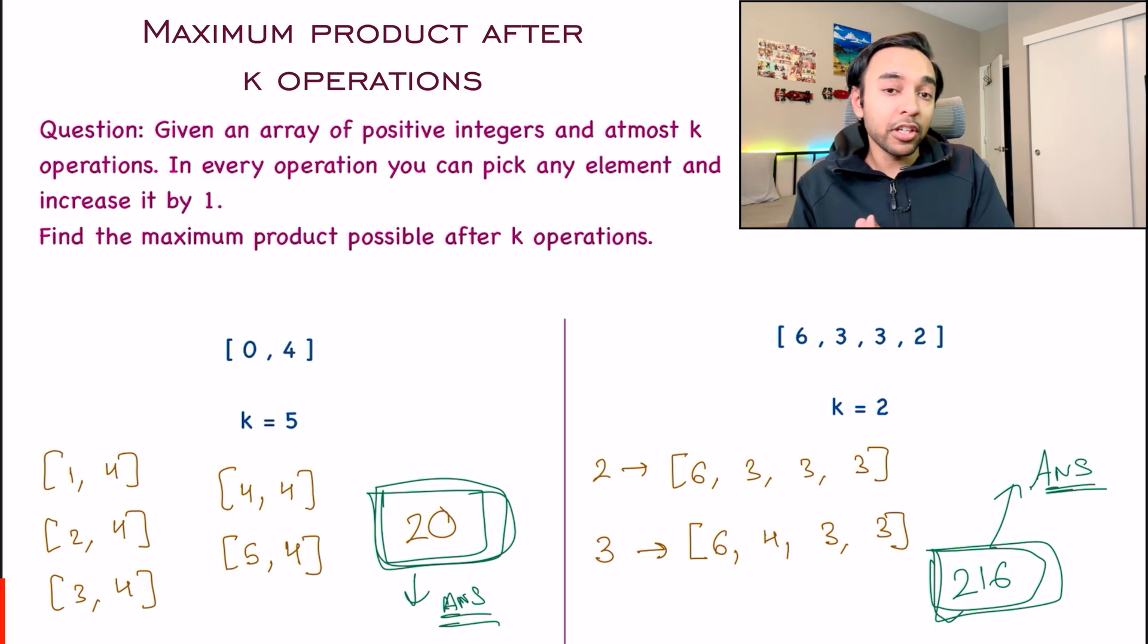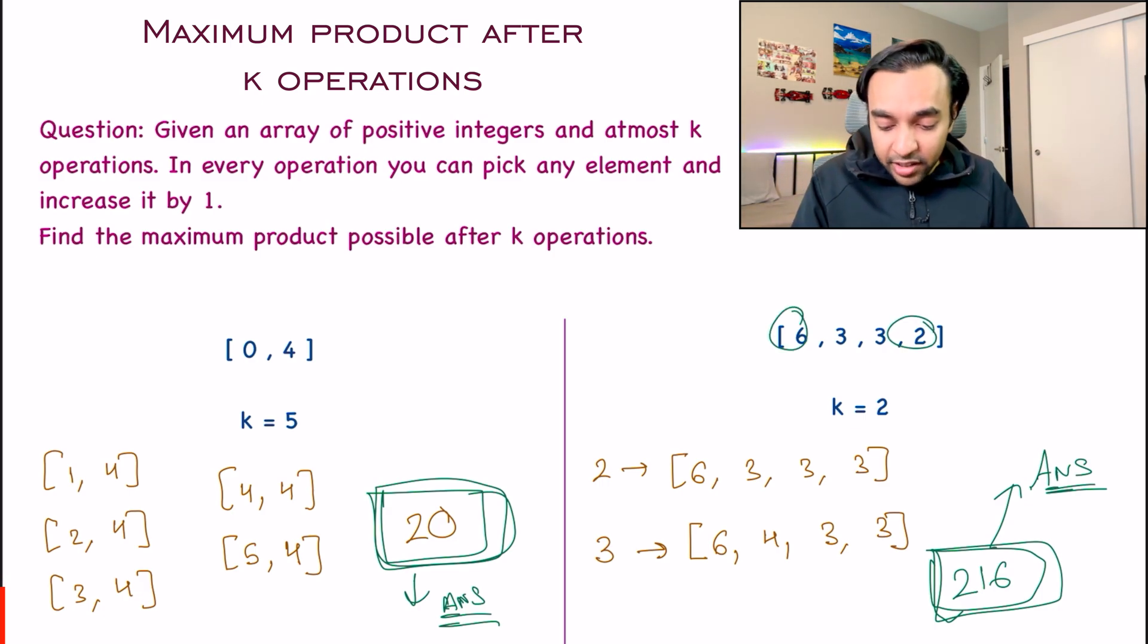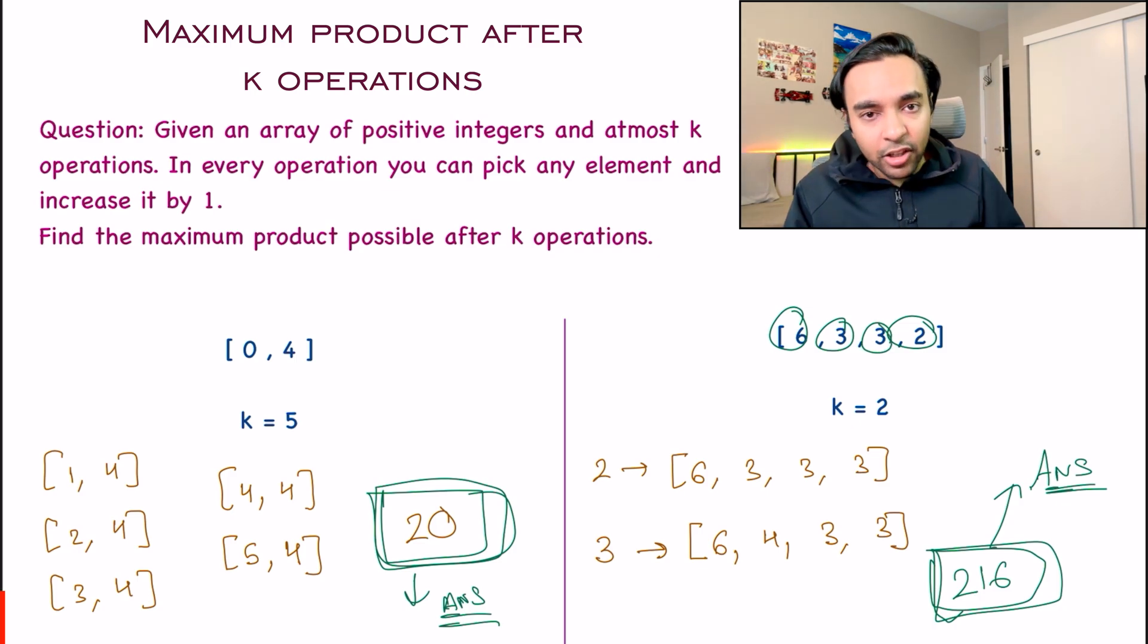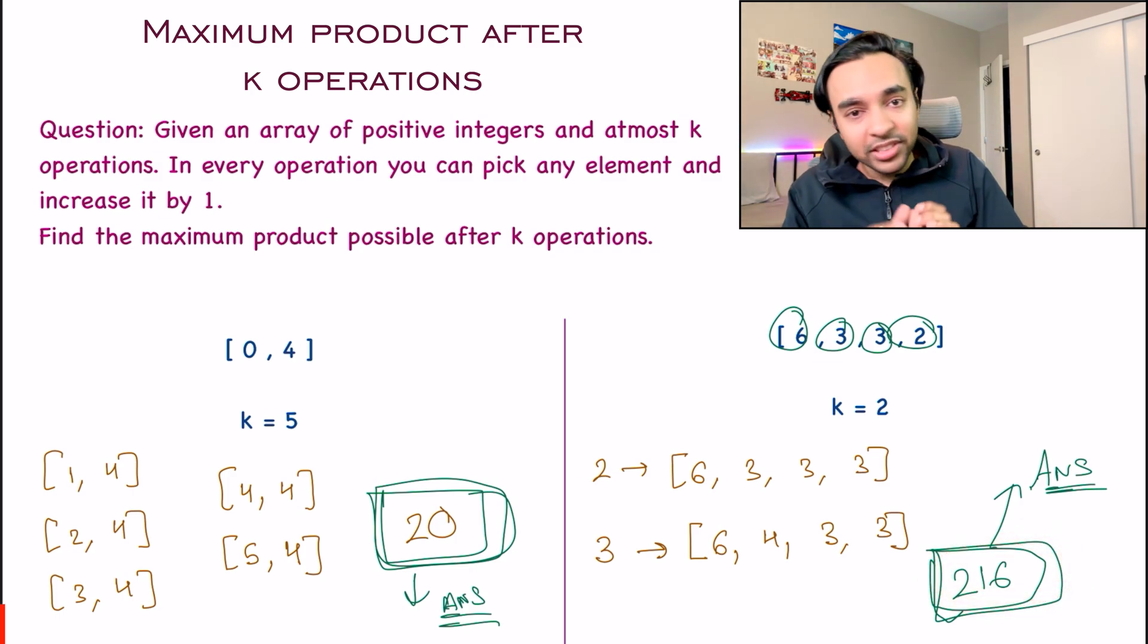No matter what other combination do you try, let's say you try 6 and 2, or let's say you try 3 and 3. In every other combination, the maximum product will be less than 216. So for this particular test case, 216 is the answer.